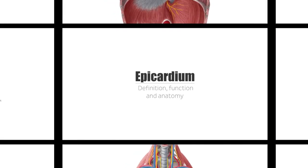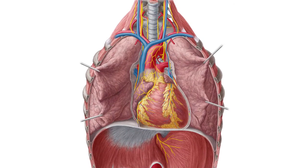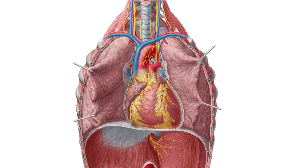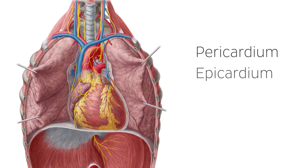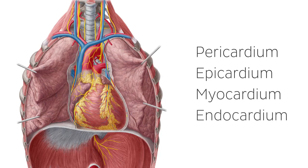The heart is a large muscular organ that is comprised of four different layers. From the outside to the inside, they are called the pericardium, the epicardium, the myocardium, and the endocardium. Each layer has a different function, which primarily aids the pumping action of the heart, which allows the blood to flow through the body.